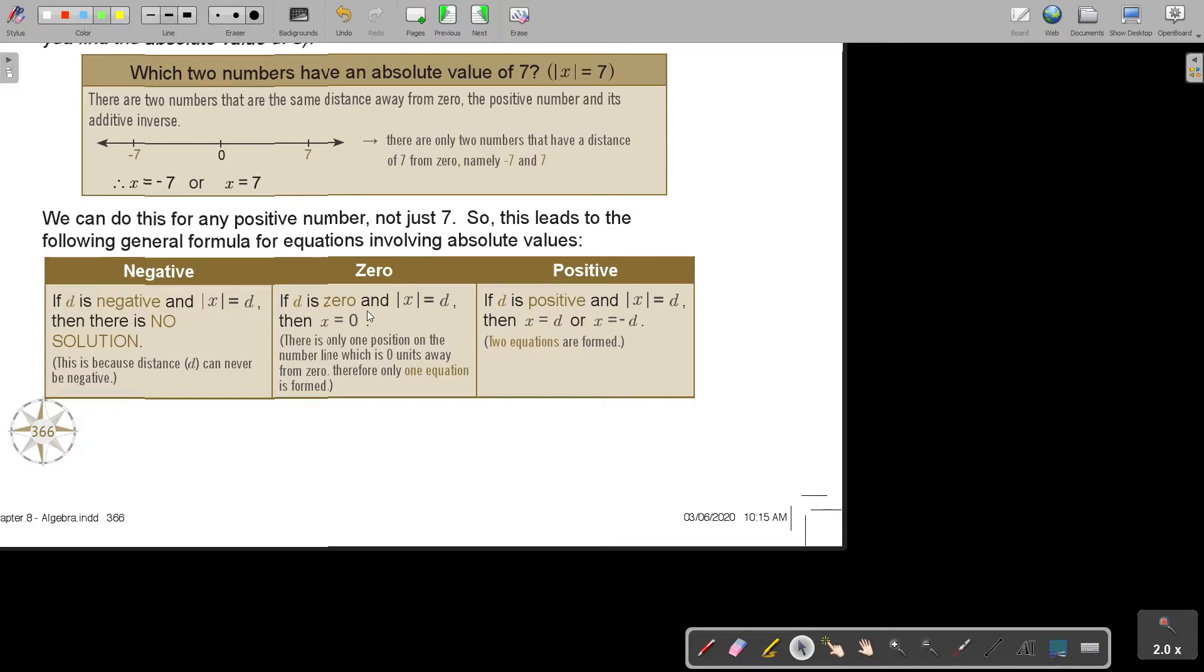If D is zero, then there is only one position on the number line which is zero units away from zero. Therefore, only one equation is formed. If D is positive, then X is a positive option to the right or a negative option to the left. So two equations are formed.